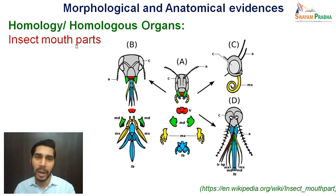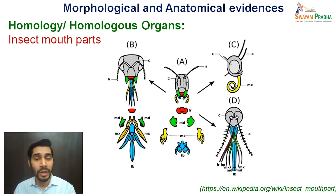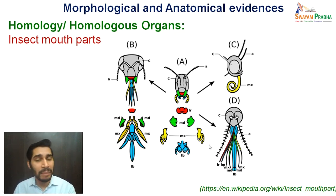Yet another example comes from the mouthparts of various insects. A represents a primitive chewing type of mouthpart present in grasshoppers. It evolved to different mouthparts seen in different insects today — the lapping type in bees, the siphoning type in butterflies, or the sucking type in mosquitoes. They have different functions in different species, but the basic structures are similar, involving the mandible, maxillae, labium, labrum, hypopharynx, etc. So the basic structure is same but they evolved into different types, again supporting the theory of evolution.